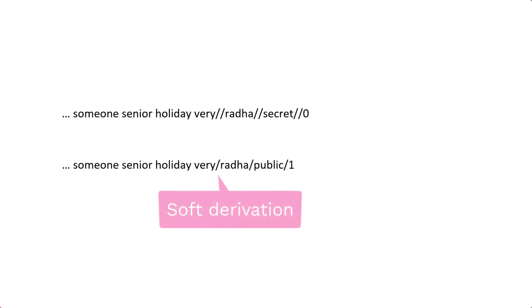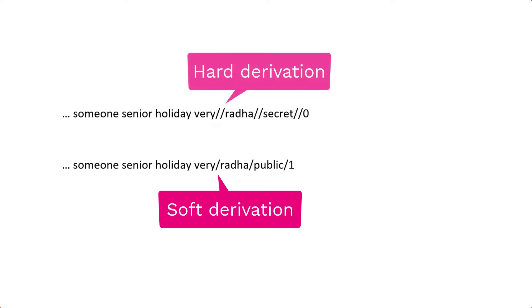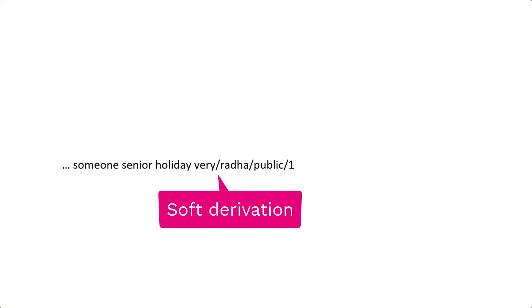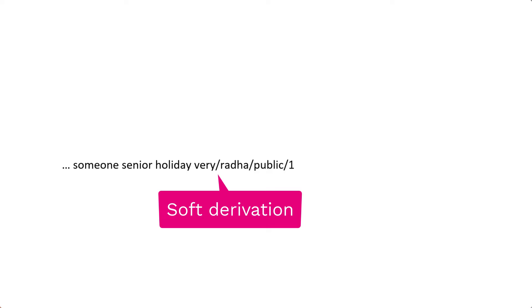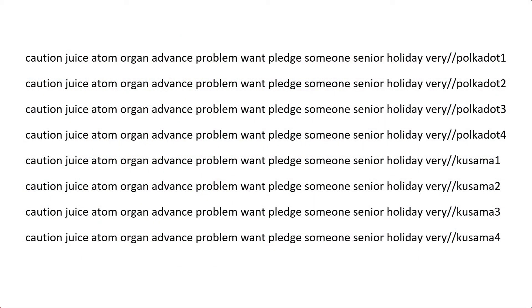A single slash corresponds to soft derivation and a double slash corresponds to hard derivation. If you use soft derivation to create new accounts, any third party can verify that all of your accounts are owned by a single entity — there may be use cases for that. However, from a security perspective, you need to be aware that when a third party gets access to the private key of one of the soft-derived accounts, they can also get access to your root account's private key. On the other hand, hard-derived accounts leave no trace of derivation. In any case, you need to remember the derivation paths like passwords to access your derived accounts.